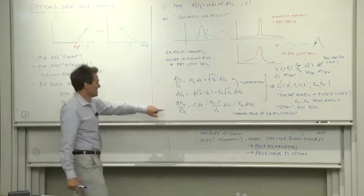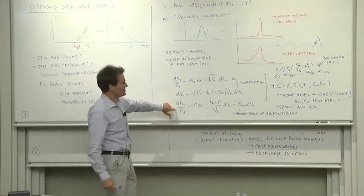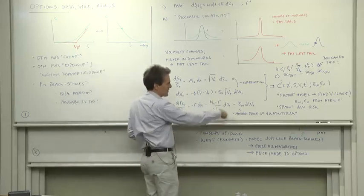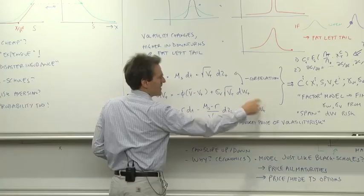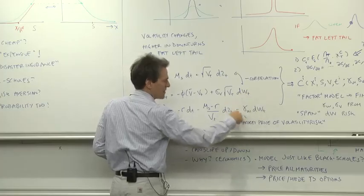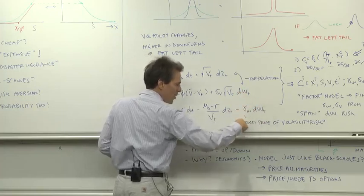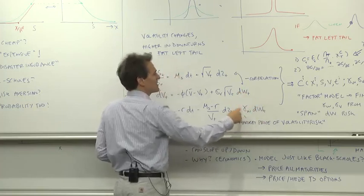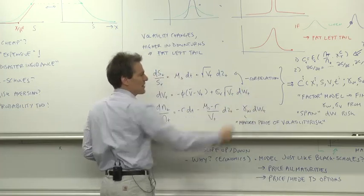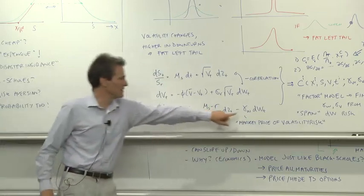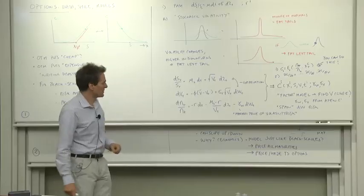We know how to do this. We need to write down a discount factor and then do what we did last time. The discount factor, the first term, we know how to do. But we need to add, there is the possibility that there's a market price of volatility risk. The discount factor needs to load on all the shocks, not just the shock to the stock price. So let's add that in as a parameter and see what happens.